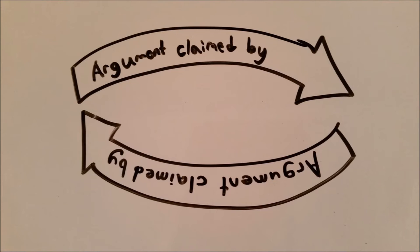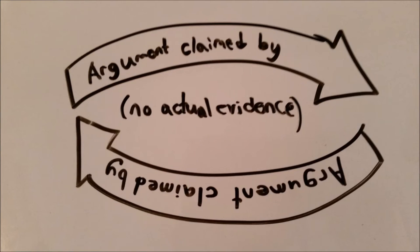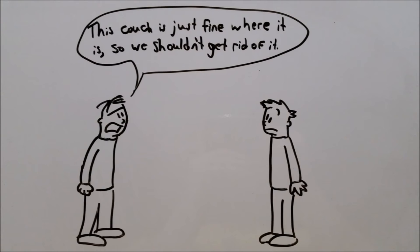When you talk in circles, you don't make any actual points. Therefore, a circular argument just restates an argument rather than actually proving it. If Bernard says, the couch is just fine where it is so we shouldn't get rid of it, he's not actually making any points, just affirming that he doesn't want to move his couch.